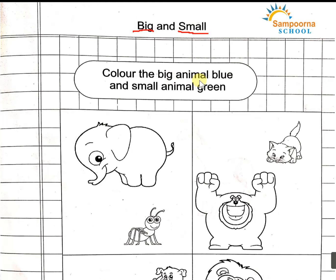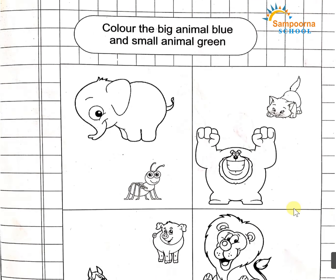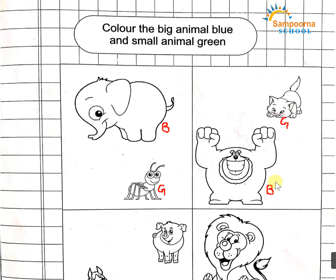Big animal — blue. The big animal, which color will be blue. And the small animal, which will be green. Here, what is big? What is small? So here the big one will be blue and the small one will be green.